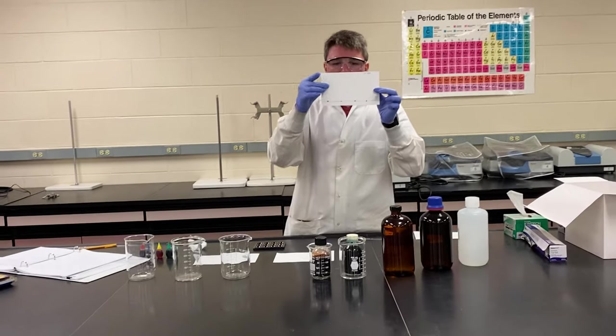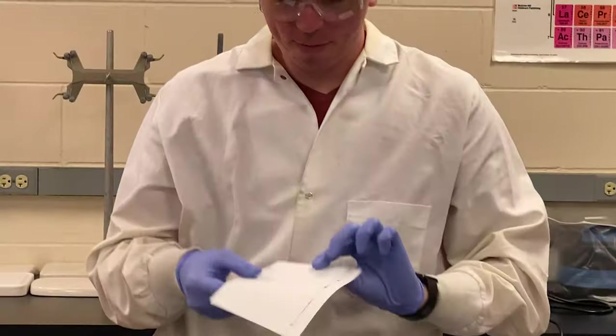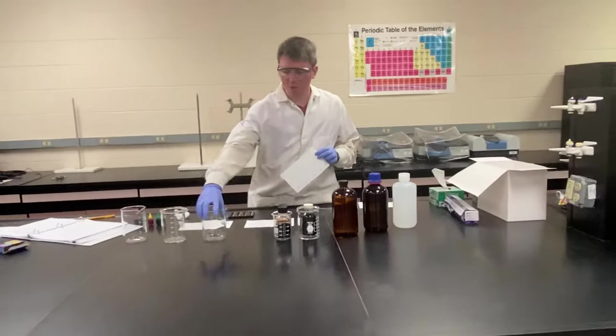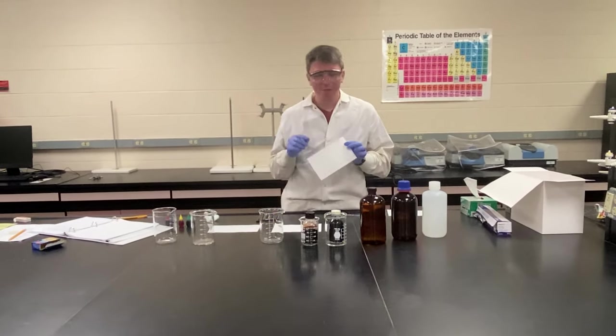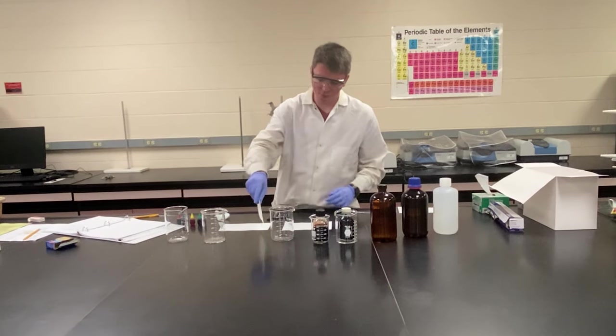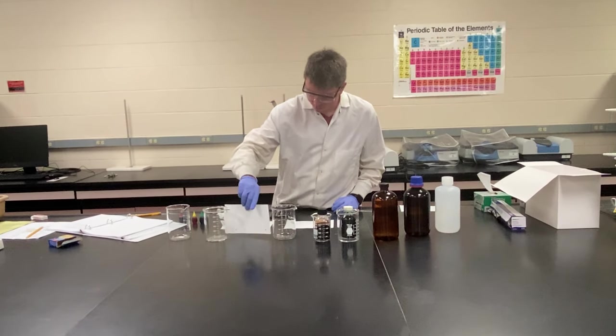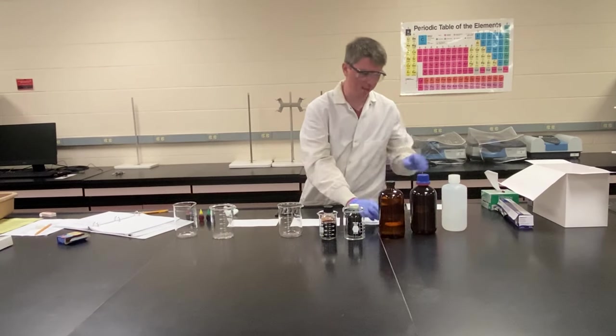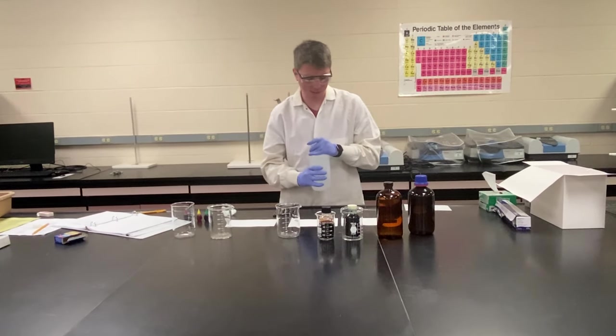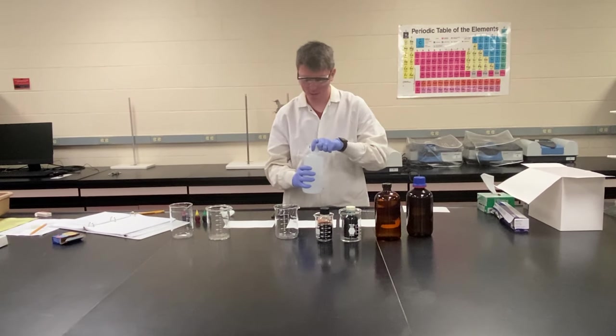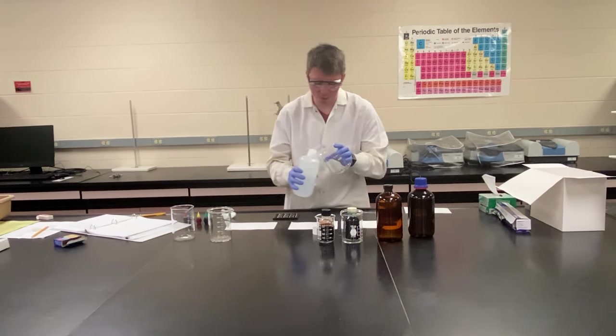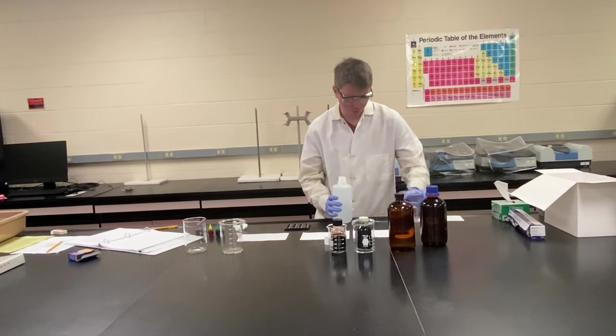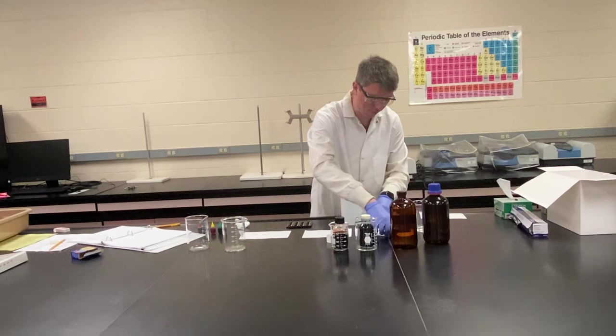So once we spot all of our samples onto our baseline, what we're going to do is add some of the solvent we want to our beaker. The big thing is you don't want your solvent to be above your baseline. So you want to make sure that the solvent's below that baseline mark. The first one I'm going to add is some 2% saline.